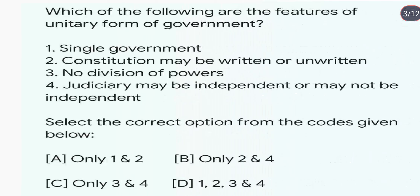Which of the following are the features of the unitary form of government? Unitary form of government mein kaun sa feature hai? Single government hoti hai; constitution may be written or unwritten; no division of power; and judiciary may be independent or not. All of these are correct, so the answer is D — one, two, and three.